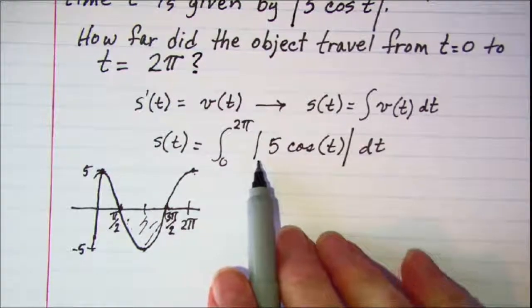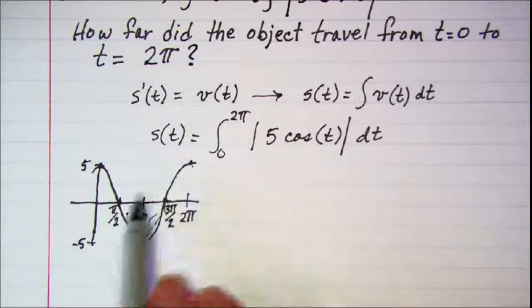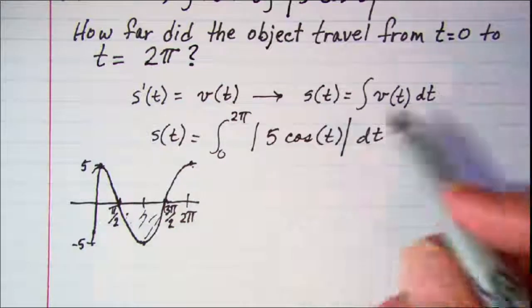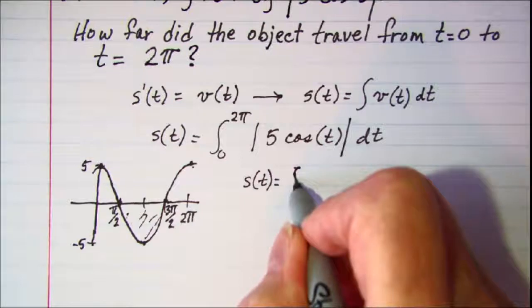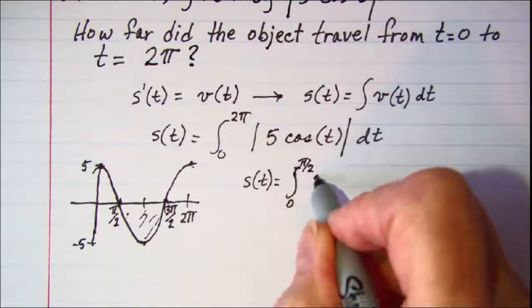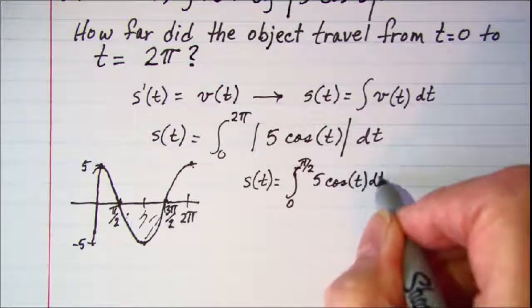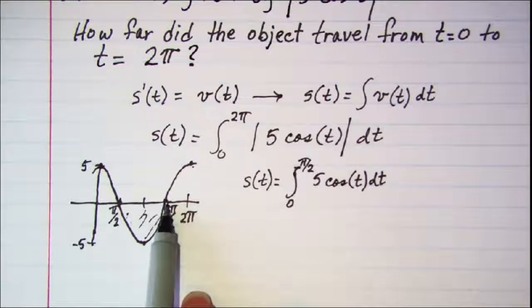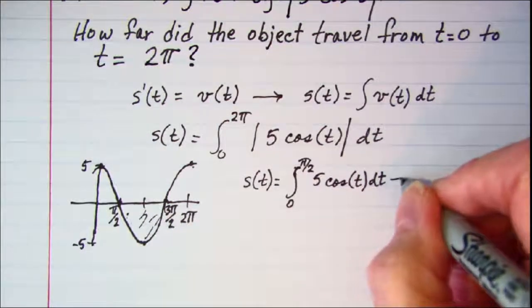So our integral is going to need to be broken up into three pieces. Our first piece is going to go from 0 to pi over 2. And then the section from pi over 2 to 3 pi over 2 since that's below the x-axis we're going to have to subtract that integral.